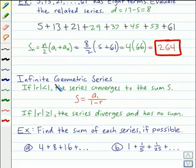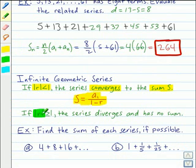Let's wrap things up now by talking about infinite geometric series. There are two types. One, where the absolute value of r is less than 1, we say that kind of series converges to the sum S. And here's the formula to find S. The other type is where the absolute value of r is greater than or equal to 1, that type of series diverges and has no sum.